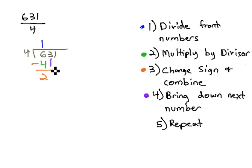Next, we would bring down the next number, bring down the 3, and then repeat the process. We would divide 4 into 23 and say it goes in 5 times. We would multiply 5 times 4 to get 20. We would change the sign and combine them to get 3, and then we would bring down the next number, the 1.